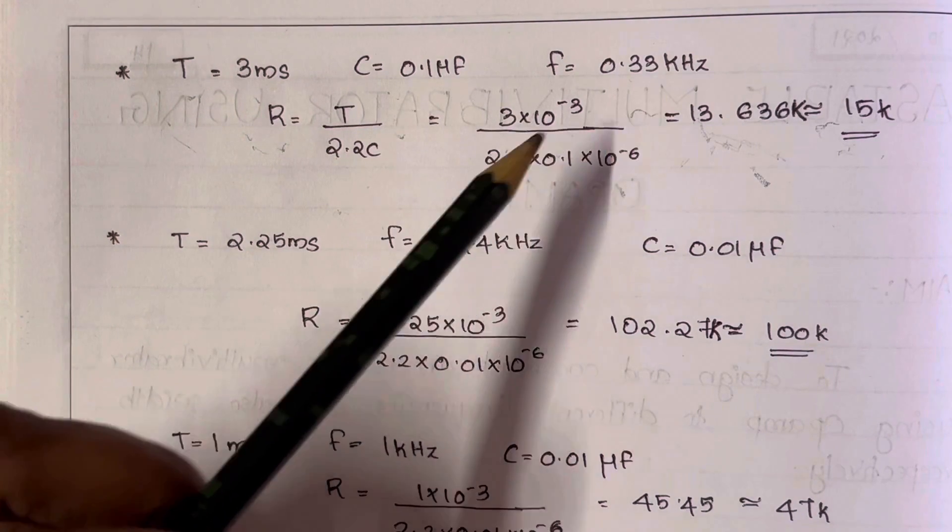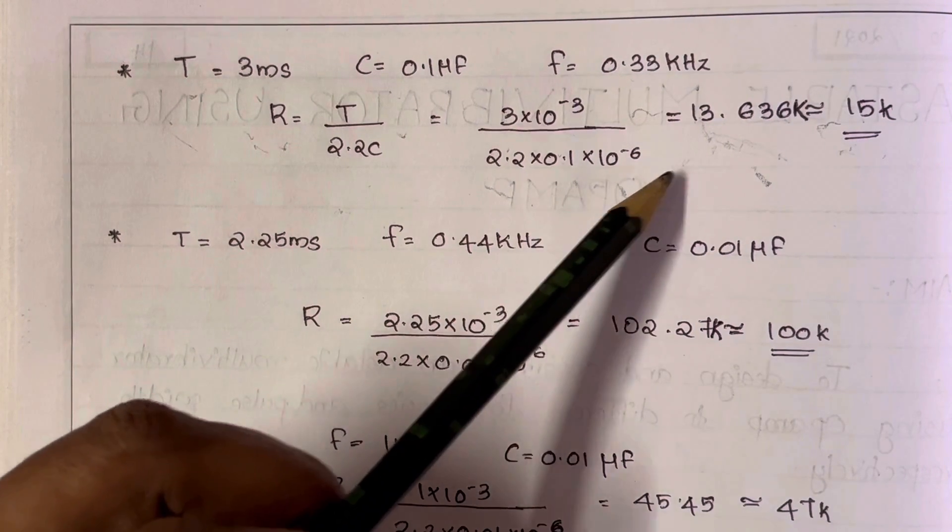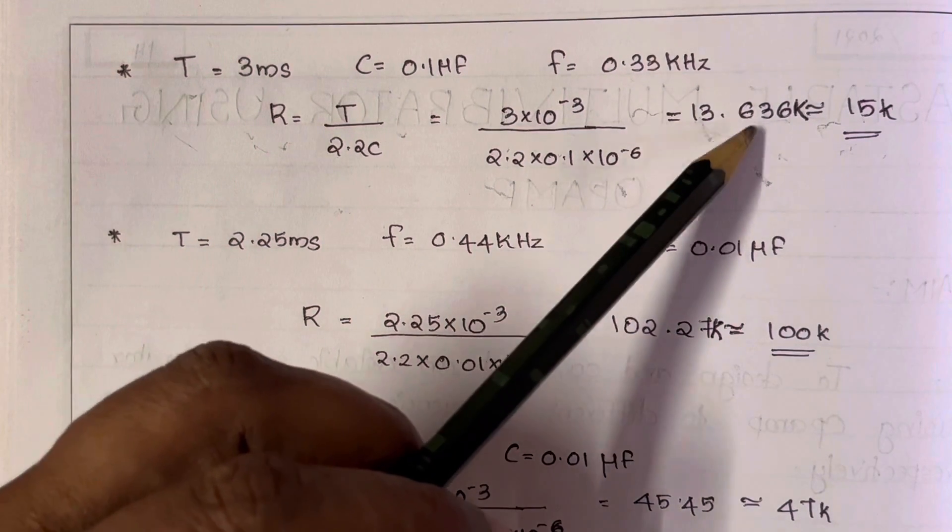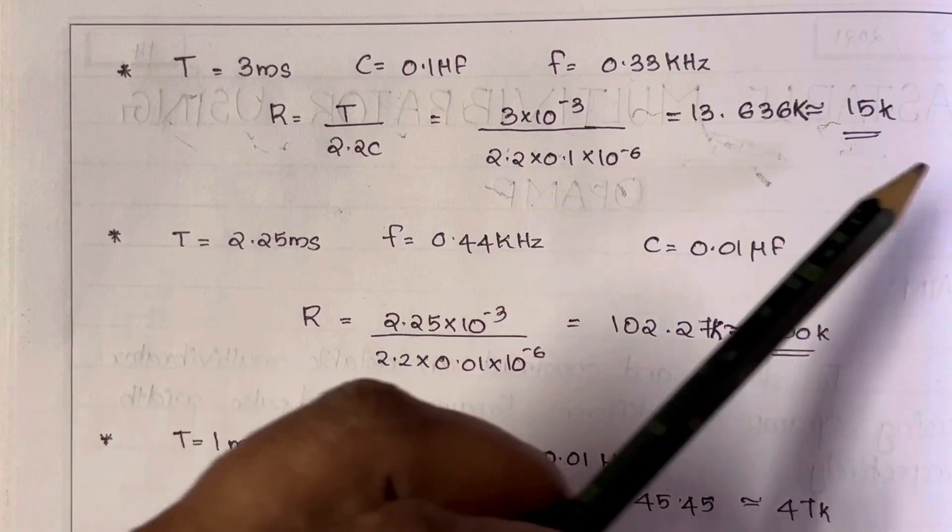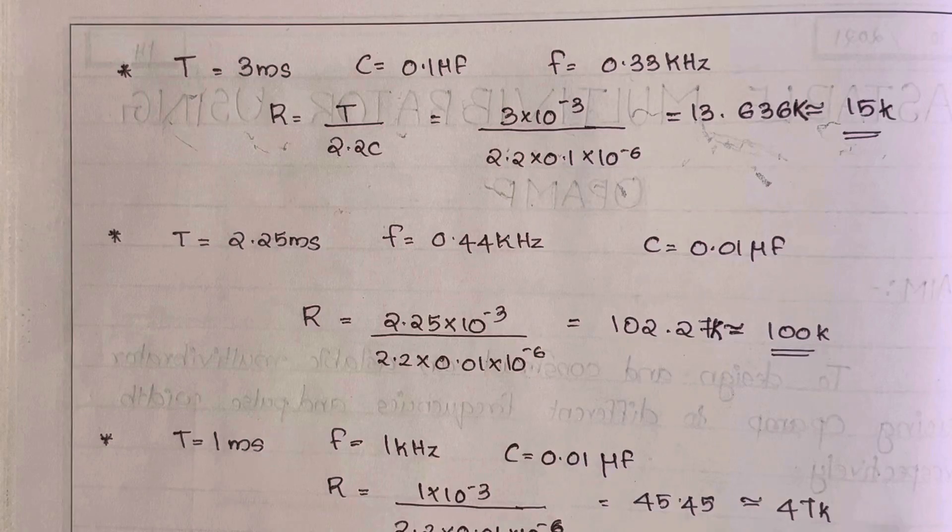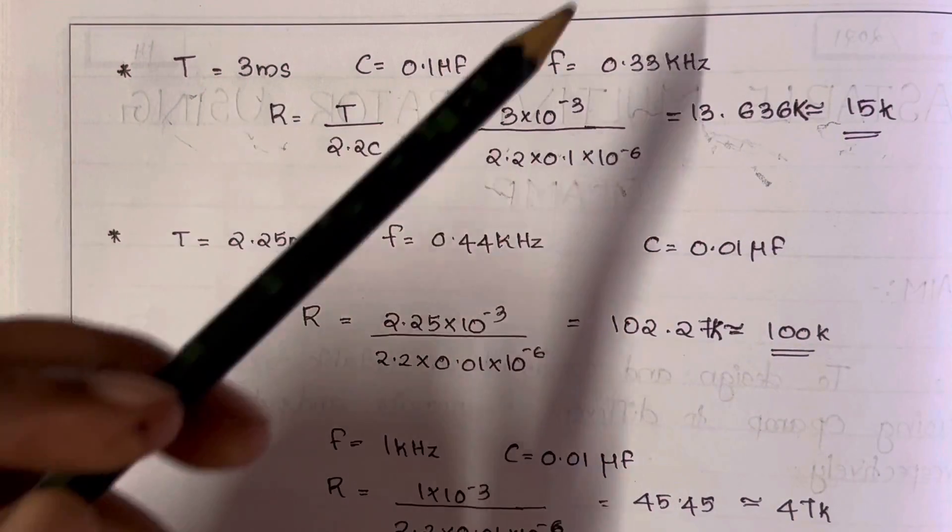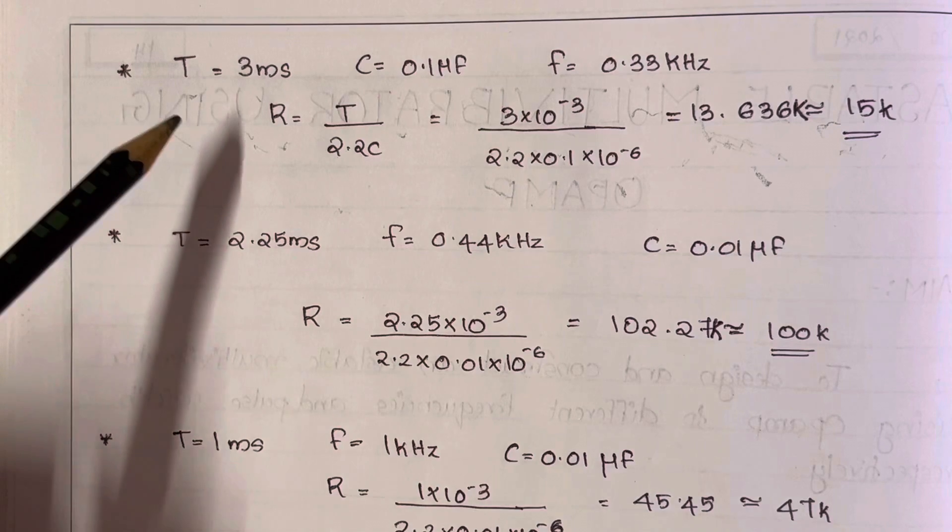That is 3 into 10 raise to minus 3 by 2.2 into 0.1 into 10 raise to minus 6, which equals 13.636K. Then for 13K, you can take 15K, no problem. If you are given the frequency, you can find time period as reciprocal of frequency.